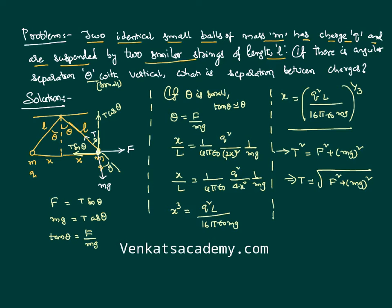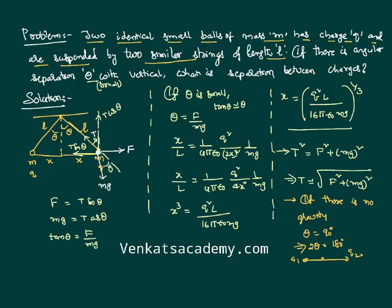Someone may ask an add-on question: what if there is no gravity? If we place the system in a lift where there is no gravity, nothing is pulling the masses back. Therefore theta becomes 90 degrees, the total angular separation becomes 180 degrees, and the two charges q1 and q2 simply align horizontally. This is Coulomb's inverse square law applied to solve this problem. Thank you, and happy problem solving!